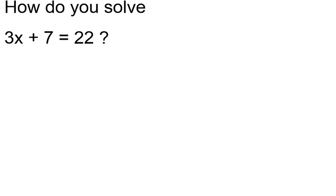Okay, we would like to solve 3x plus 7 equals 22. So I want to get rid of this 7, so I'm going to subtract 7 on both sides.